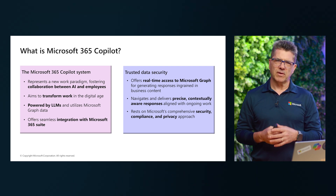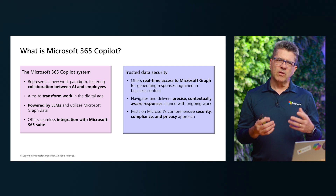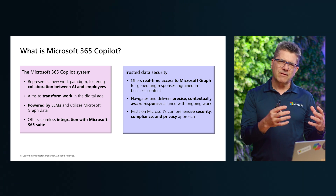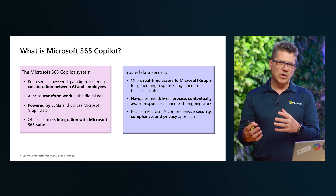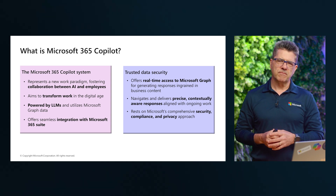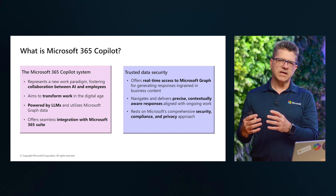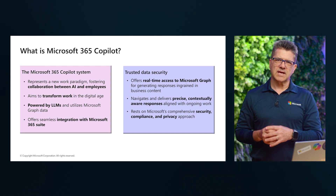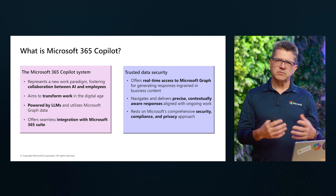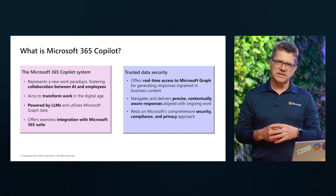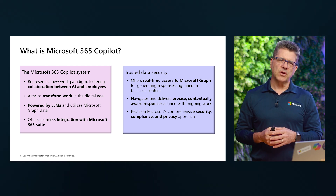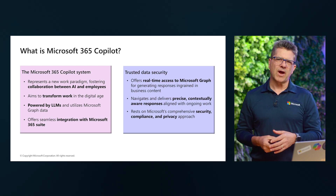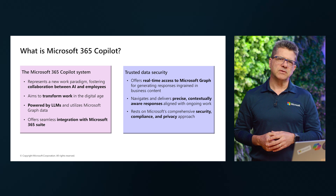Copilot is powered by the large language model. When you look at Microsoft 365, it is also secure because it leverages Microsoft Graph within your own organization. So when you begin to use Copilot in Word, PowerPoint, Teams, or Excel, it is protected, it is secure, and it is trusted because it is within your organization and talking to Microsoft Graph. Microsoft 365 has security, compliance, and privacy built-in.